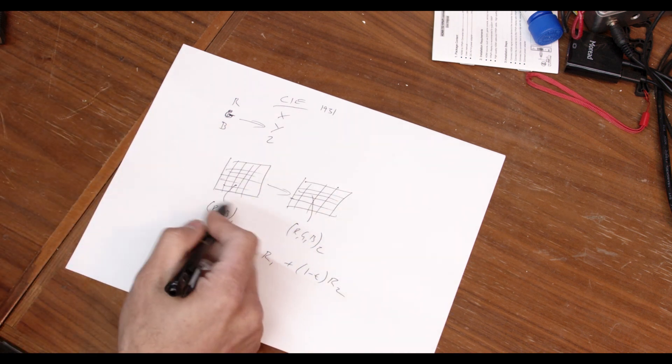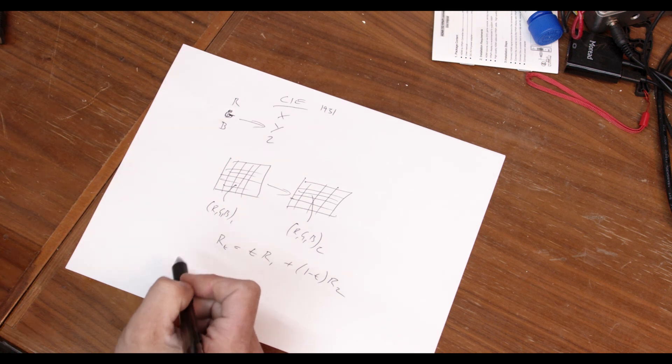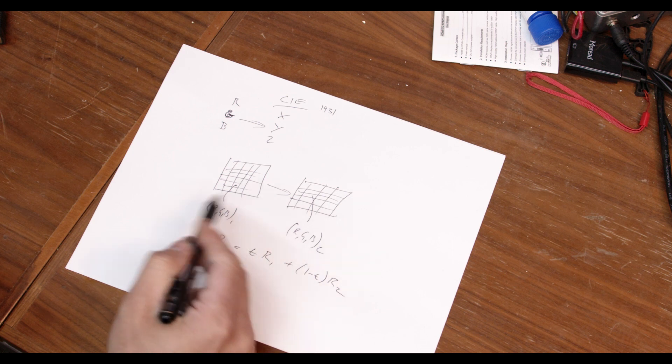If you want to make something brighter, you just multiply all these numbers by some factor. If you want to make it darker, you divide them by some factor. And a lot of really simple mathematics can work in RGB.